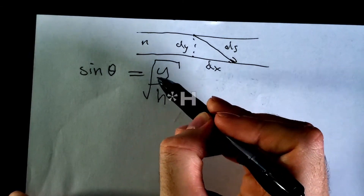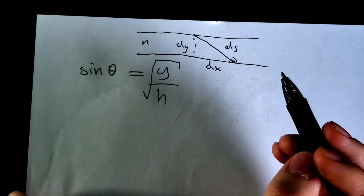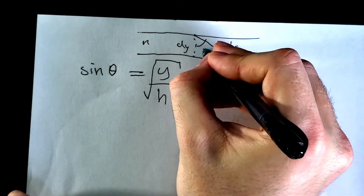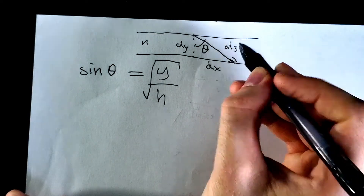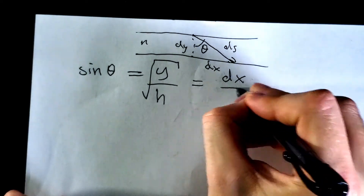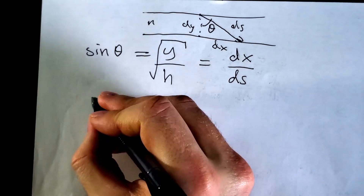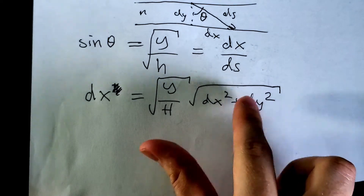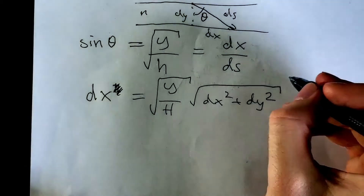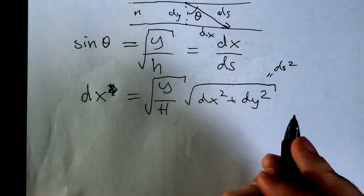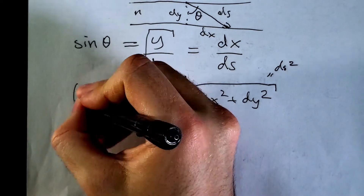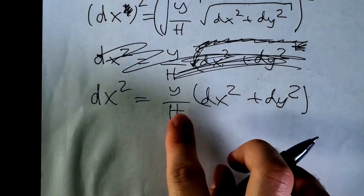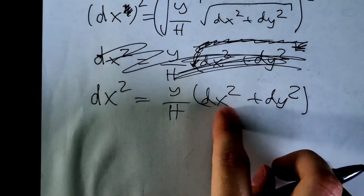From our equation, sine θ = √(Y/H). From geometry, sine θ = opposite/hypotenuse = DX/DS. So DX/DS = √(Y/H). Rearranging puts DX on one side and DS on the other. Since DS = √(DX² + DY²) by the Pythagorean theorem, squaring both sides gives DX² = (Y/H)(DX² + DY²).